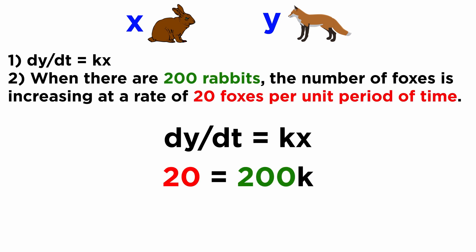Next, we are given numbers that we can use to find k, and we will get k equals 20 divided by 200, which is 0.1.